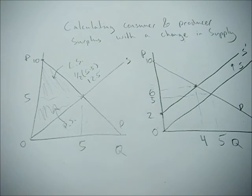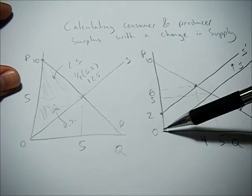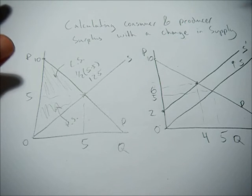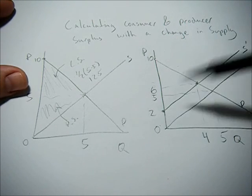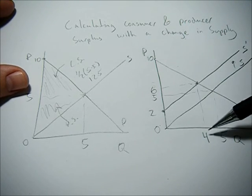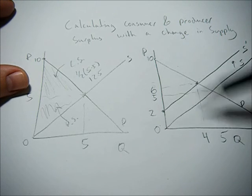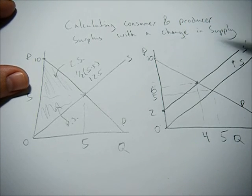Now what if supply increases by $2 at every quantity level? So, I show our new equilibrium quantity at 4, our new equilibrium price at 6.